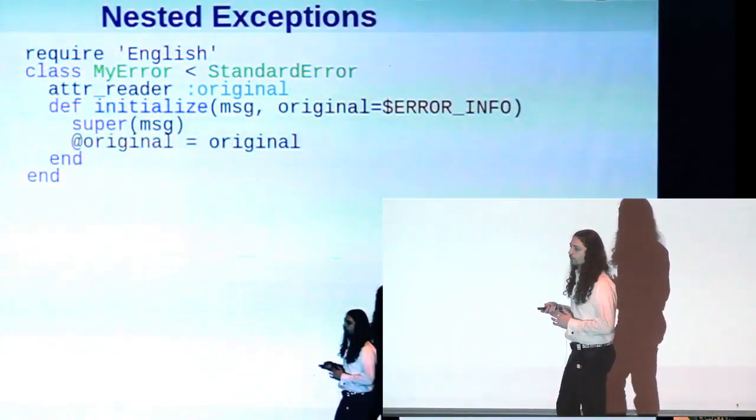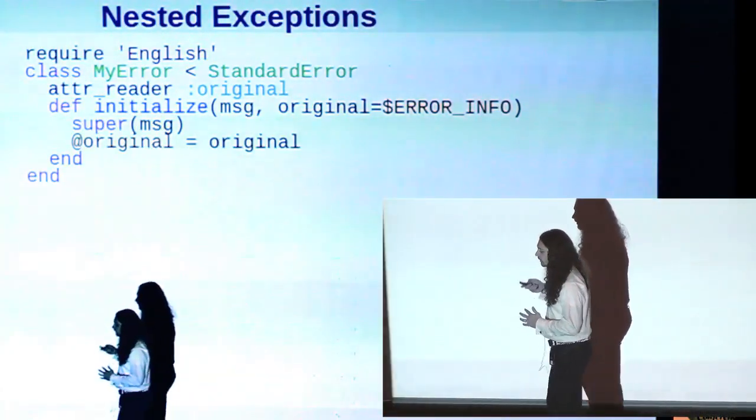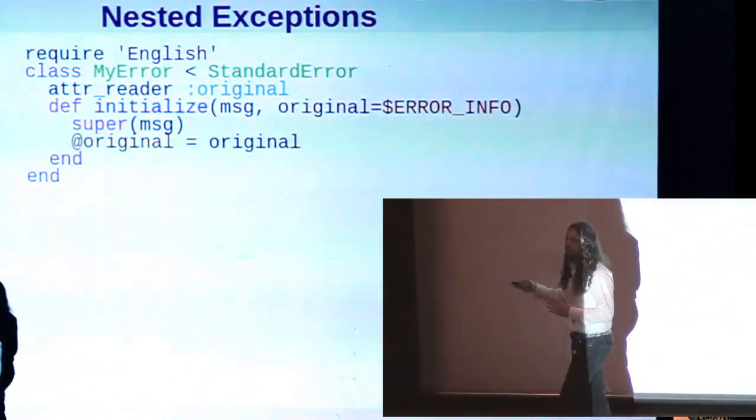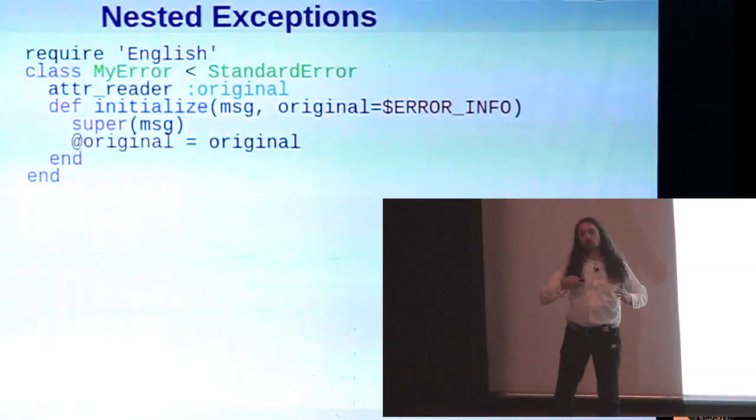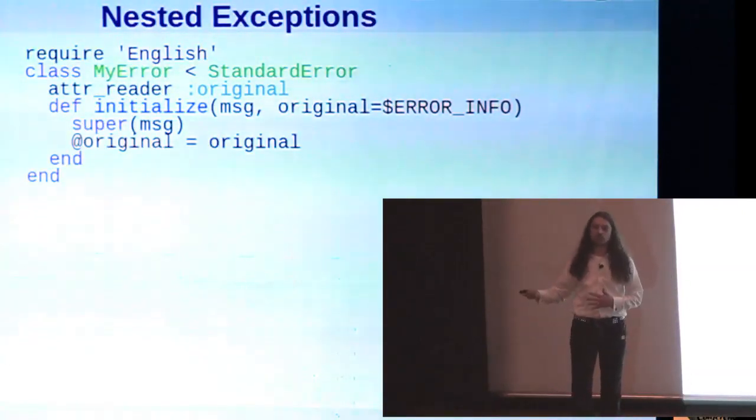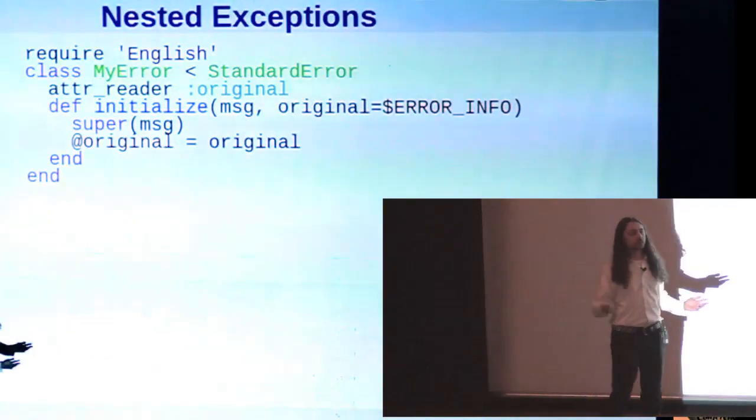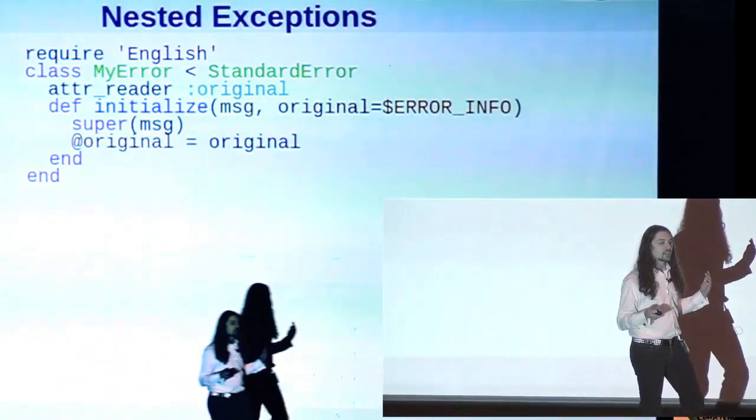Something else we can use the global error info variable for is nested exceptions. Nested exceptions, if you're not familiar with them, is just the idea of an exception which has a pointer back to whatever exception spawned it. So if you have a case where you rescue one exception and then you raise another one, nested exception has a pointer back to it. Ruby doesn't have these built in, but it's very simple to define a nested exception class. Here's an example. It's just a few lines of code.